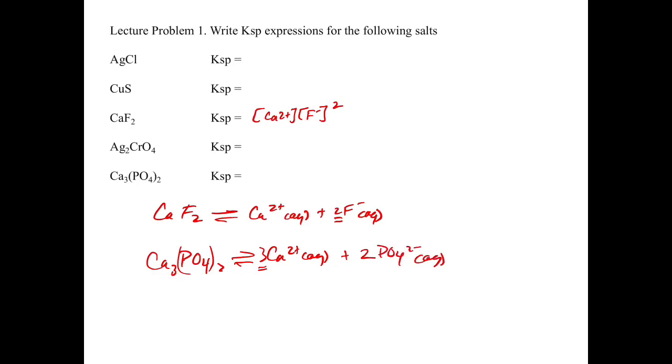If we wanted to write the KSP expression, our Ca2+ is going to be cubed and our phosphate 3- is going to be squared.